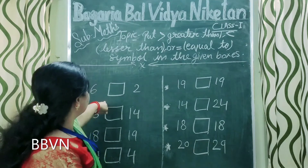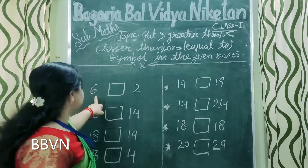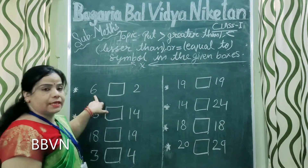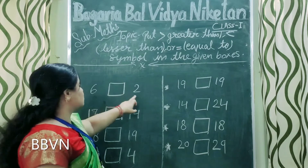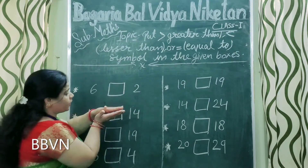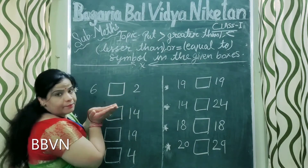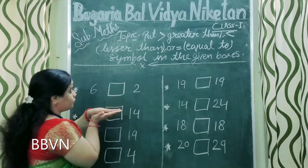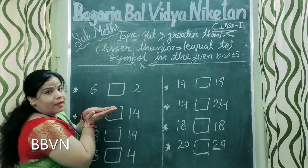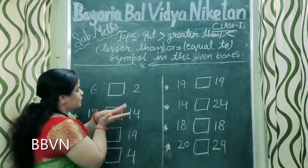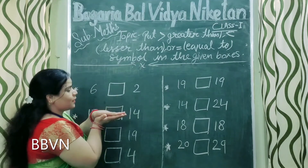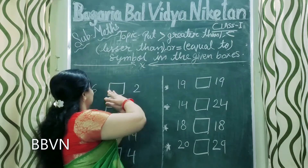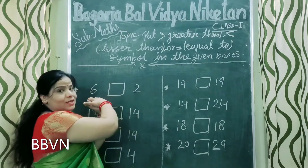Here is our first example. Dekhiye, which number is this? Six and two. Ab, yahaan par ek alligator aa gaya. Ab, alligator konse number ko khaega? Konse number ko khaega? Turn khaega — ye alligator six number ko khaega na?